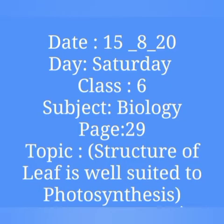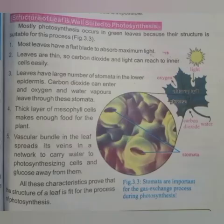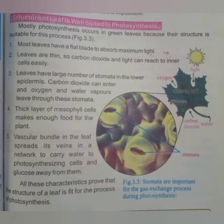Today the date is the 15th and it is Saturday. Today we will learn about page number 29 and our topic is: Structure of Leaf as situated for photosynthesis. In our previous lecture I explained deeply about photosynthesis, its process, and the parts of plants. In this topic we will discuss about the internal structure that is situated for photosynthesis.